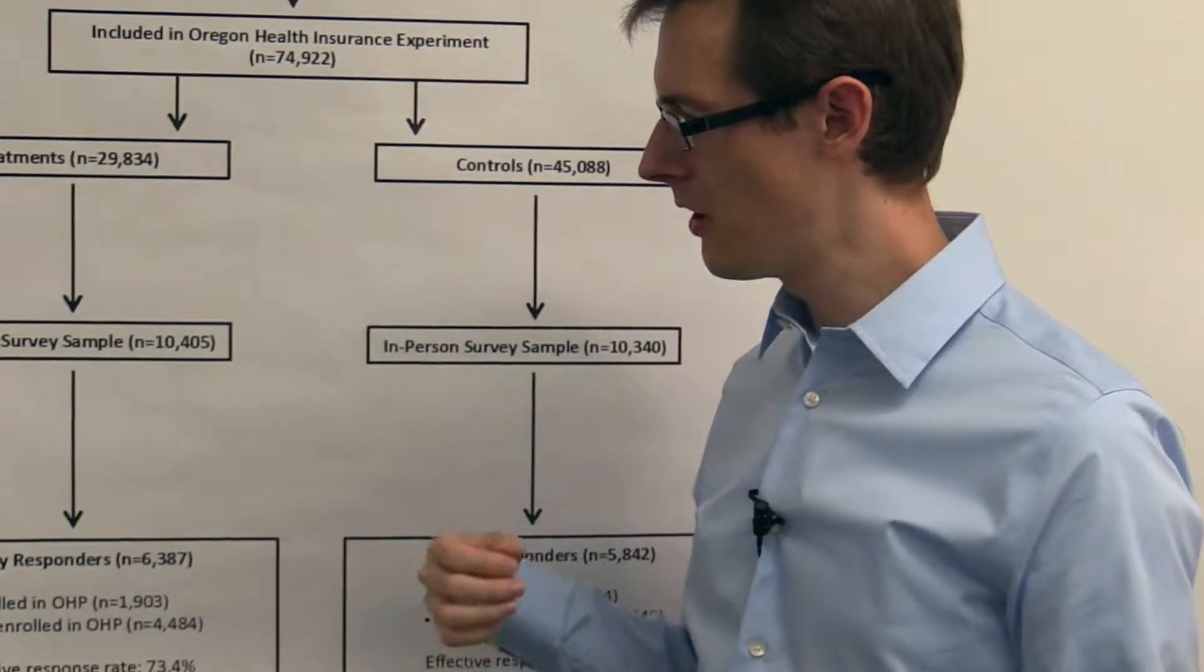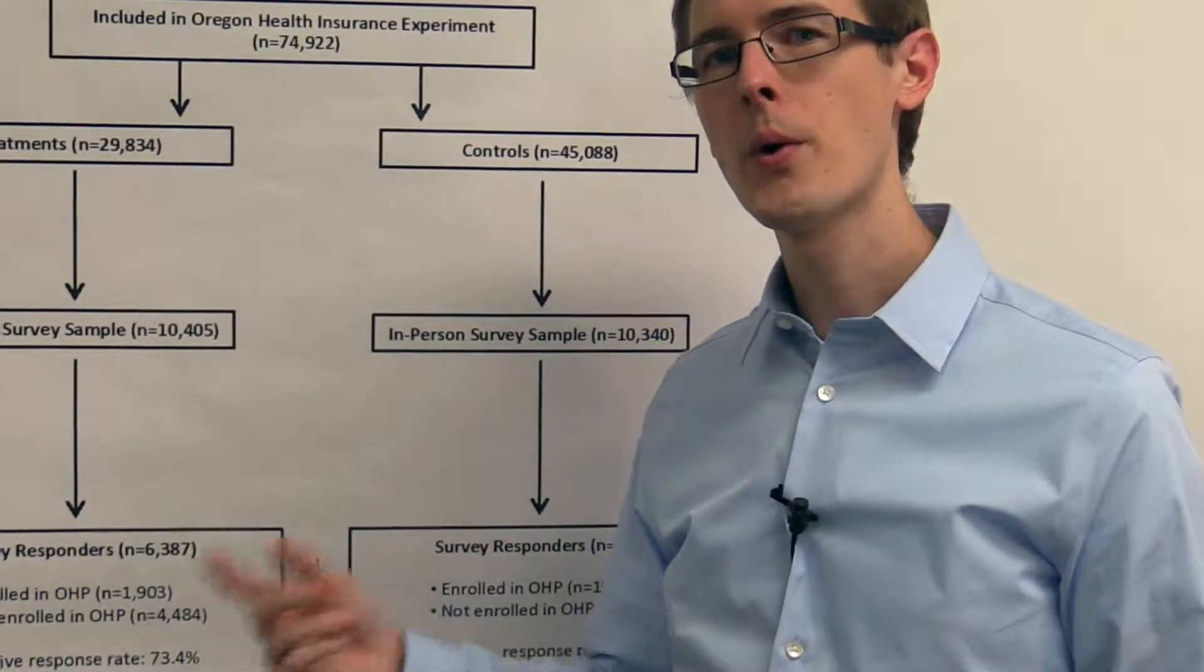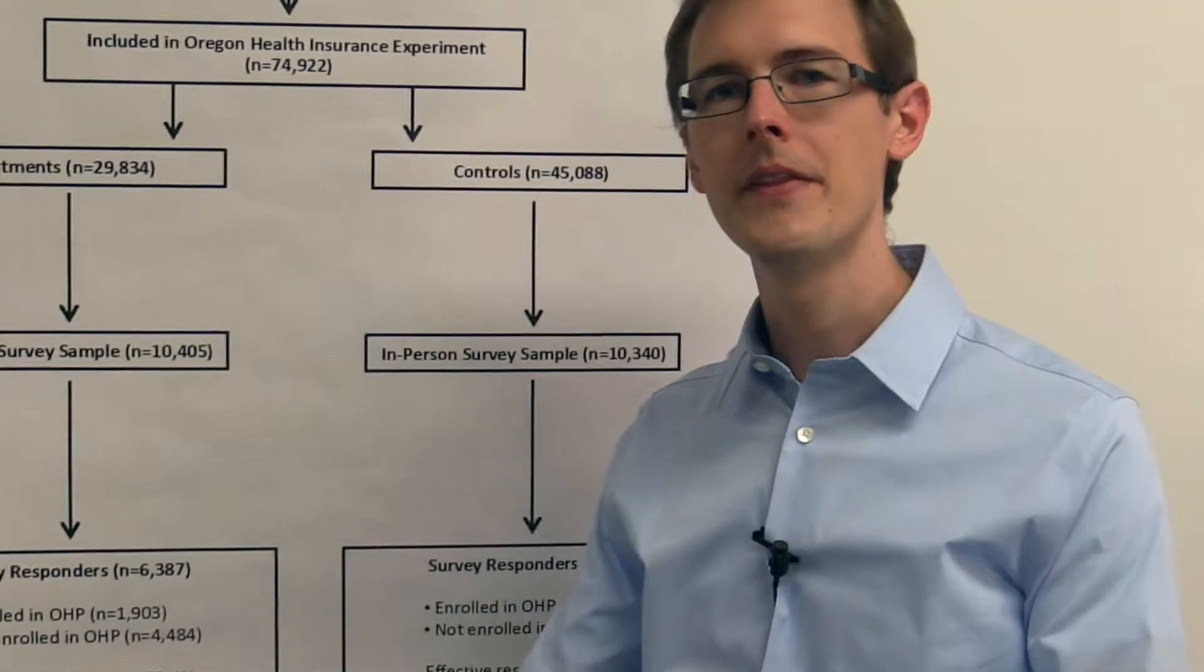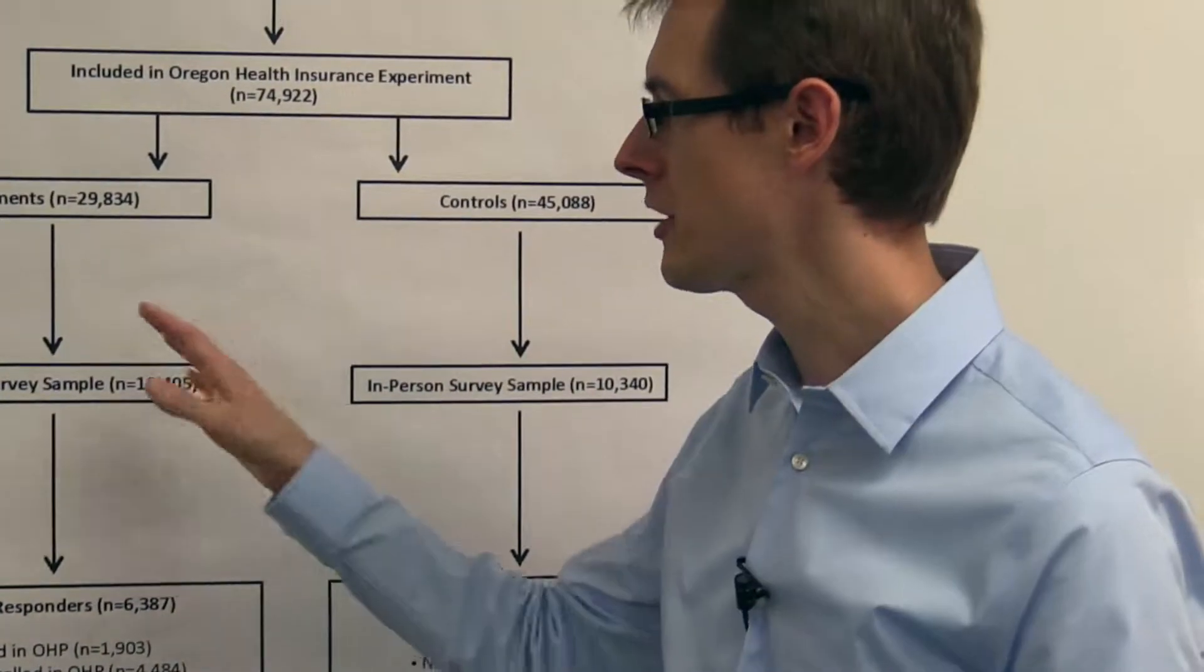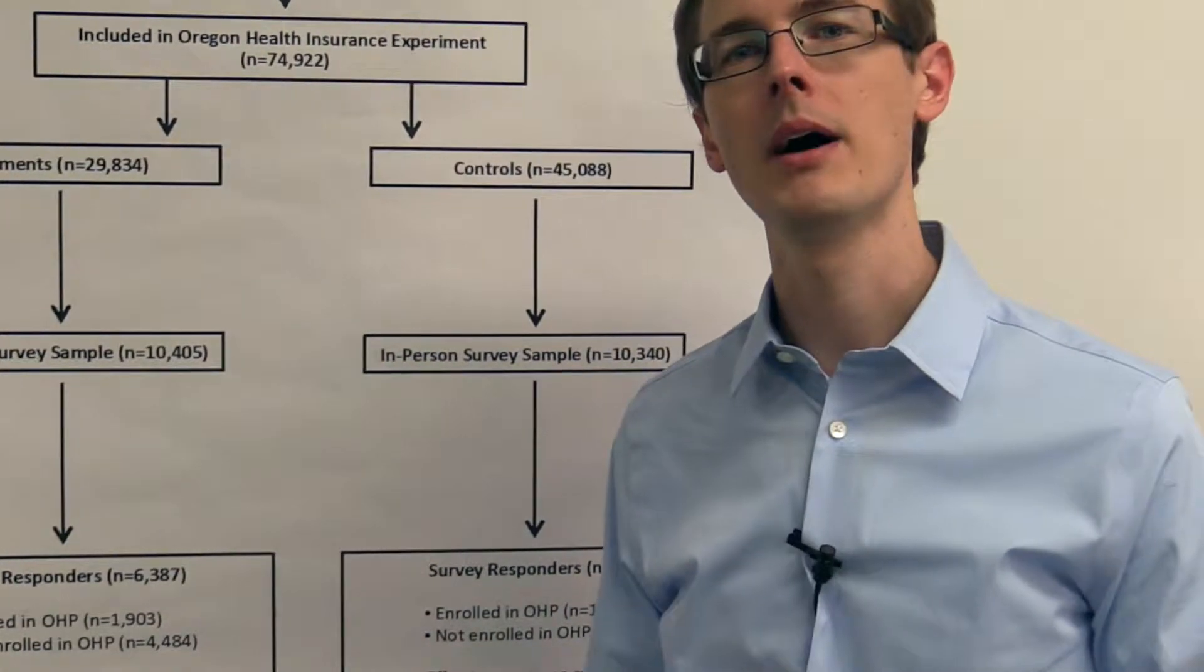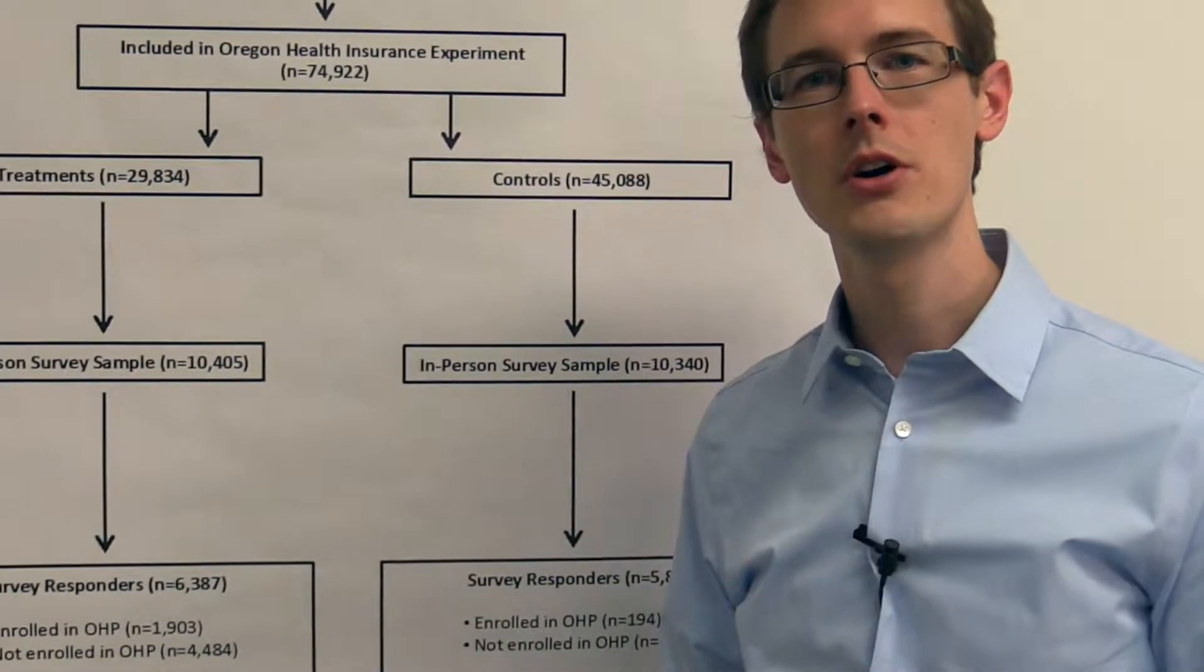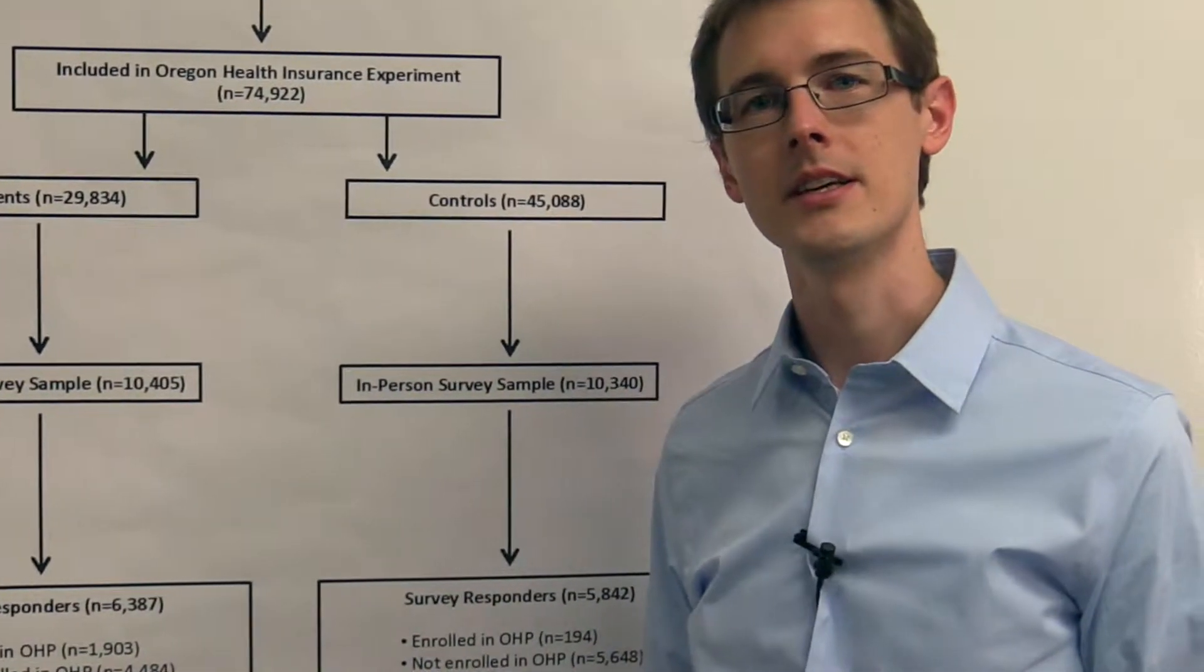So what this is saying is that when there's non-response, you have to worry about whether the two groups of people, the responders and the non-responders, are the same or not. And if they're not the same, then any treatment effects you calculate are only going to be valid for the responders. It's not going to tell you anything about what the non-responders are like. So in the next module, we'll talk about some ways that people try to deal with this in practice.